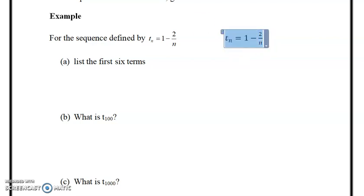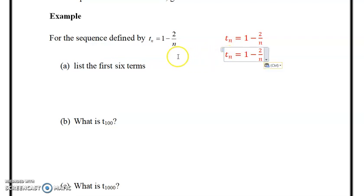So I'll rewrite the formula: t_n is equal to 1 minus fraction 2 over n. We're going to take this formula, and it's literally just like if we had a table of values and you're plugging in the first six values. You're going to put t1 in and you're just going to keep calculating.